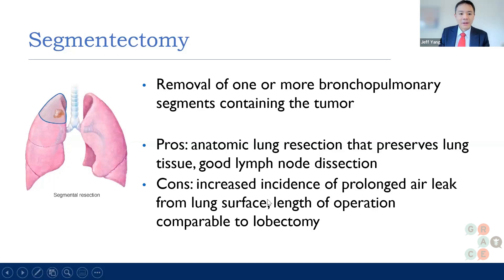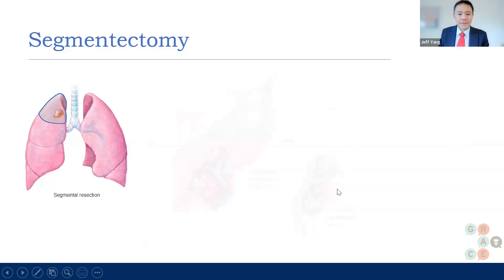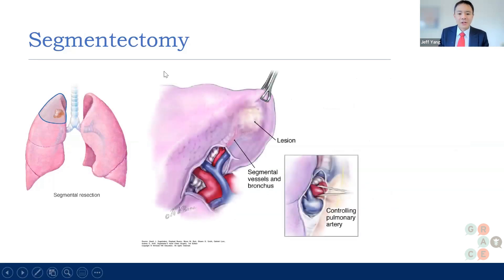leak from the lung surface. After surgery, sometimes the lung gets irritated and leaks air, and with a segmentectomy you can have more of that. It's also a longer operation — it definitely takes longer because it's one of the hardest operations that we do, since it's harder to tease out the different anatomic lung structures.